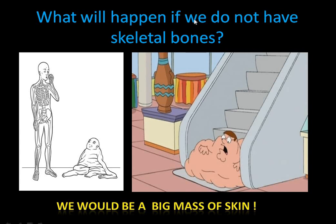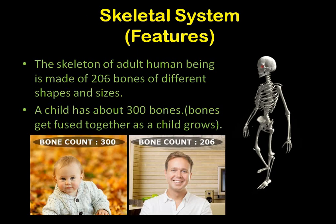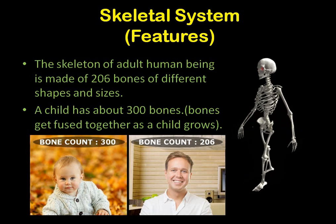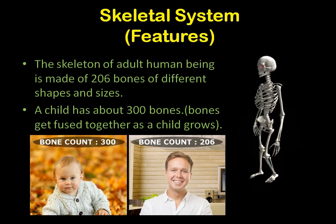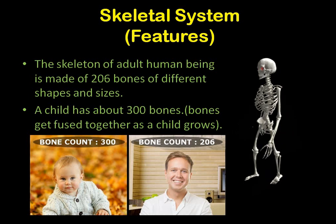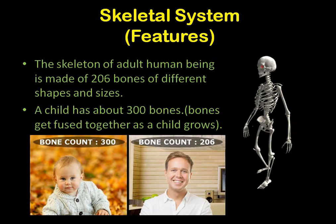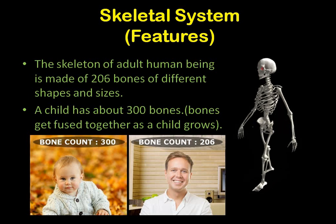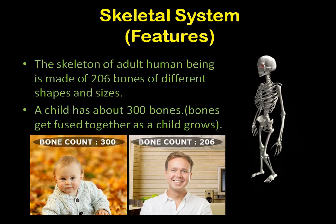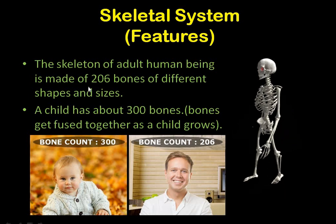What will happen if we do not have a skeleton? If we have a skeleton, we are going to stand erect. Our body has a proper shape; otherwise we will just be a big mass of skin. So this way the skeleton is important for us. The skeleton of the adult human being is made up of 206 bones of different shapes and sizes.